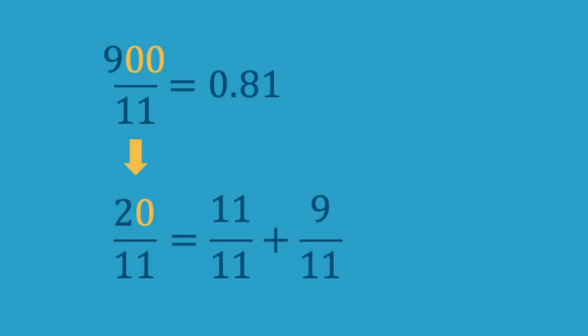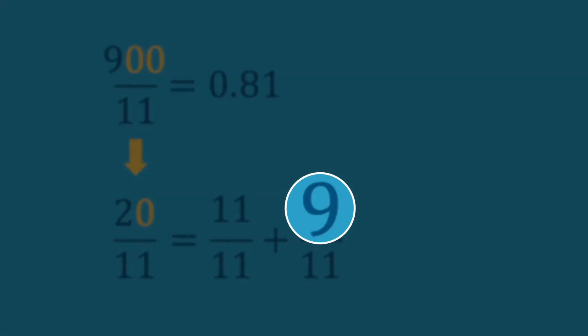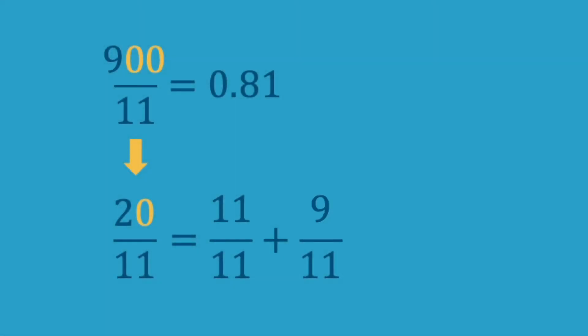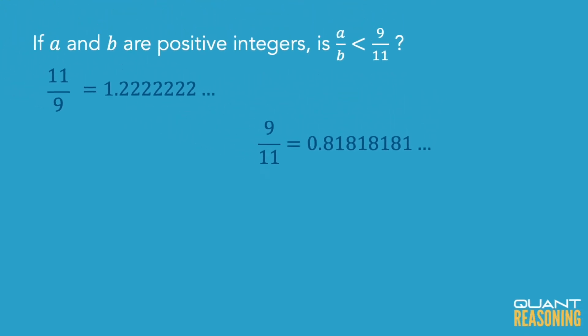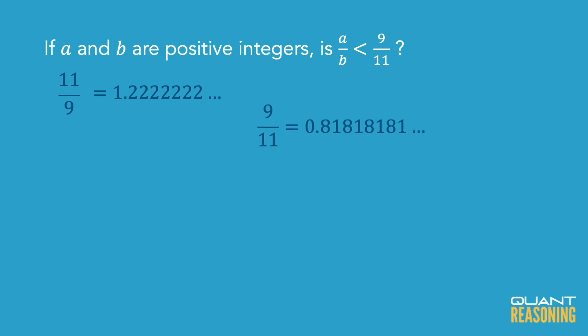There's going to be a remainder of 9, right? 11 plus 9 gets you to that 20. So we are still left with 9 over 11, which should seem very familiar — because that's what we started with. Since I'm back to where I started, this is going to be a repeating pattern. We have 0.81, and it just continues 8, 1, 8, 1 for all eternity. So now I've converted 9 over 11 to a decimal, and we already converted 11 over 9 to a decimal.